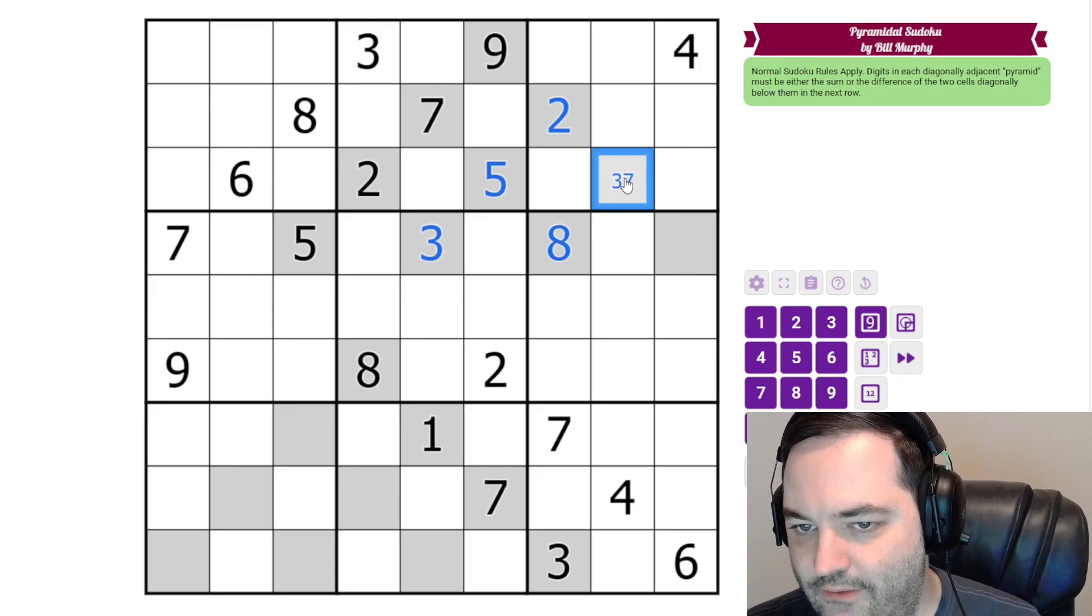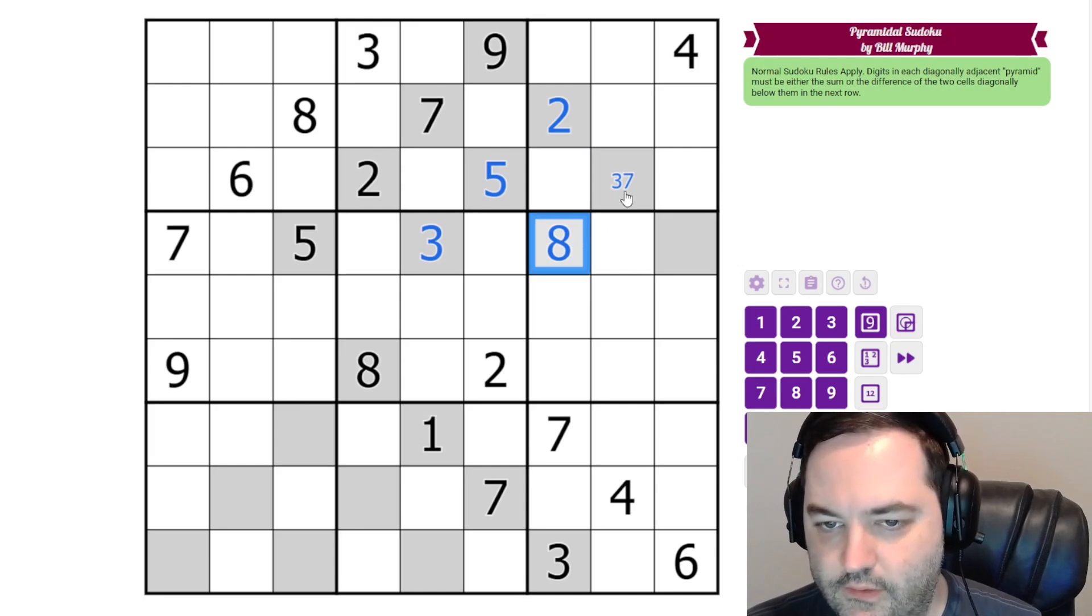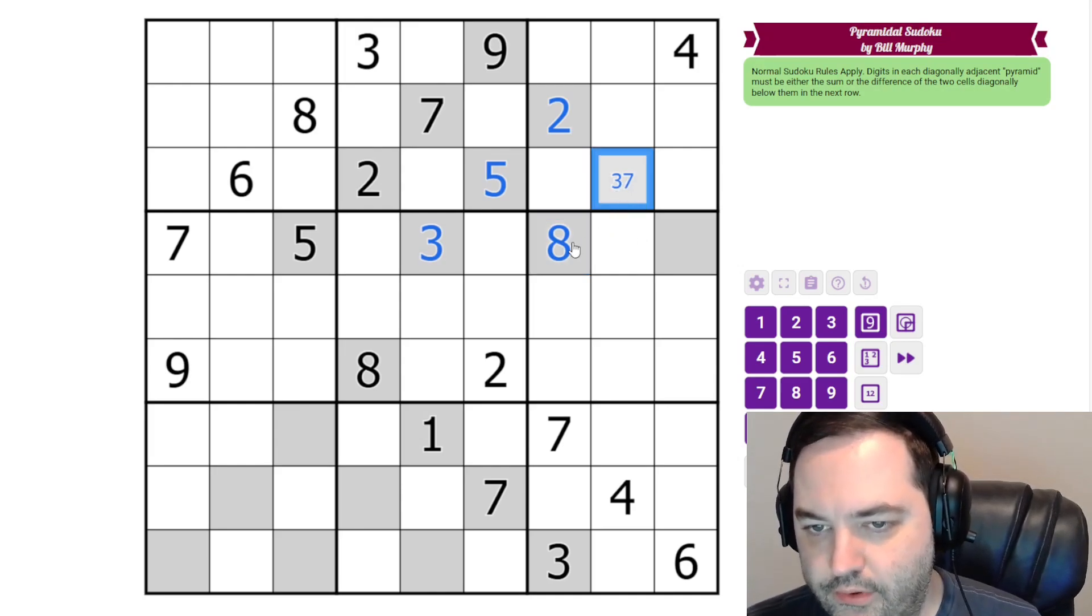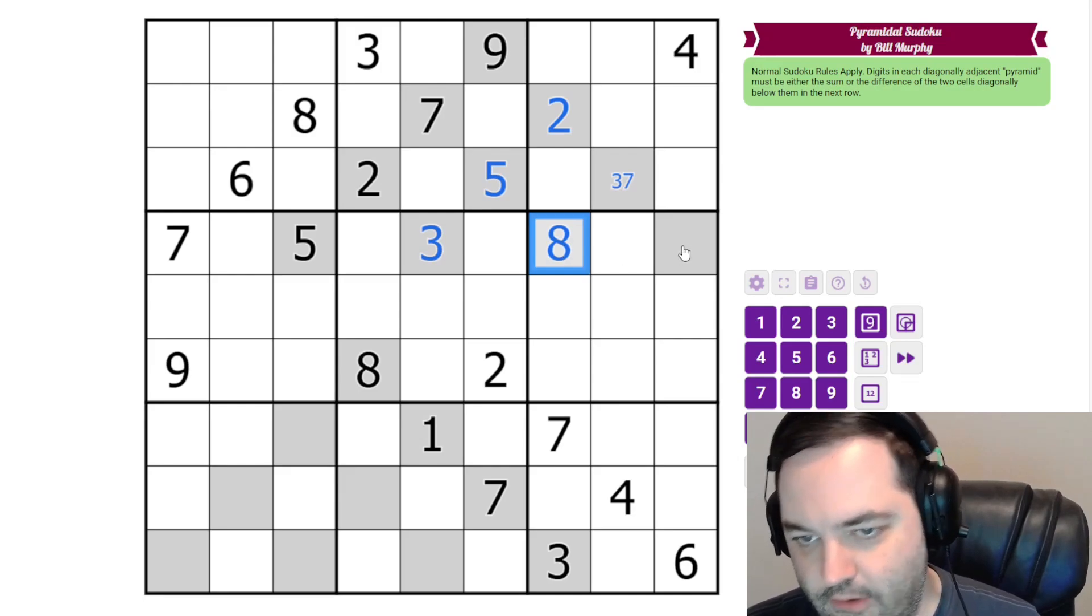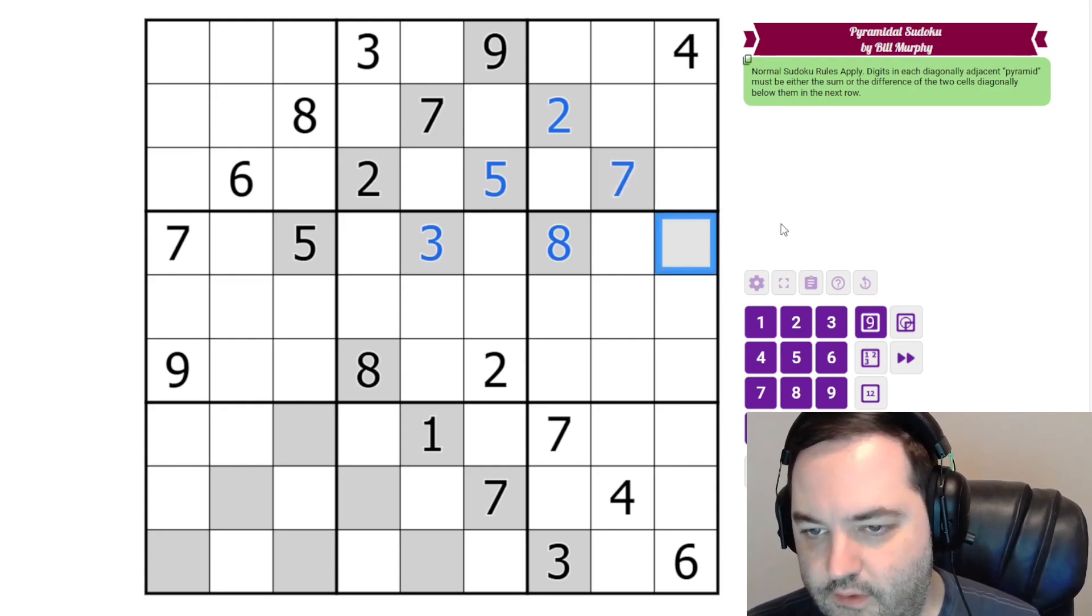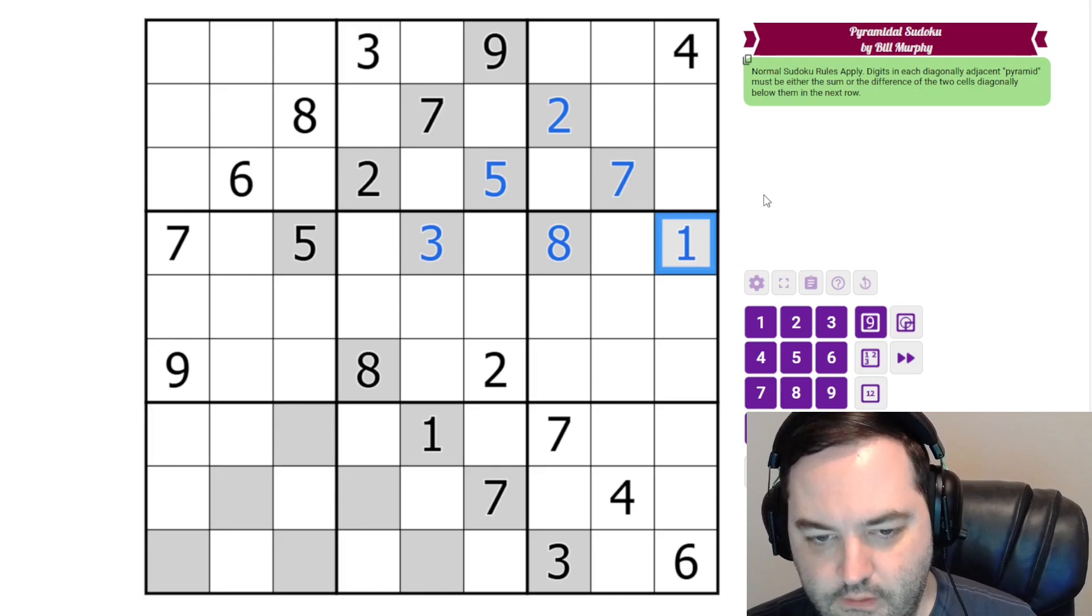And now this eight is going to tell us what this is. So in order to have a three here it has to be the sum. It's going to have to be the difference either way because this digit is going to be smaller than the eight. So we can't have a sum. If this were three though in order to have a difference from eight we can't have eleven that's too big and we can't have five because it's in the row. So this is a seven and to have a difference of seven we need a one. So that's the top pyramid done.